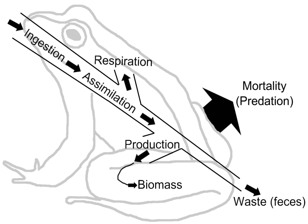Tertiary consumers, which may or may not be apex predators, then consume the secondary consumers, with some energy passed on and some lost, as with the lower levels of the food chain. A final link in the food chain are decomposers, which break down the organic matter of the tertiary consumers — or whichever consumer is at the top of the chain — and release nutrients into the soil.